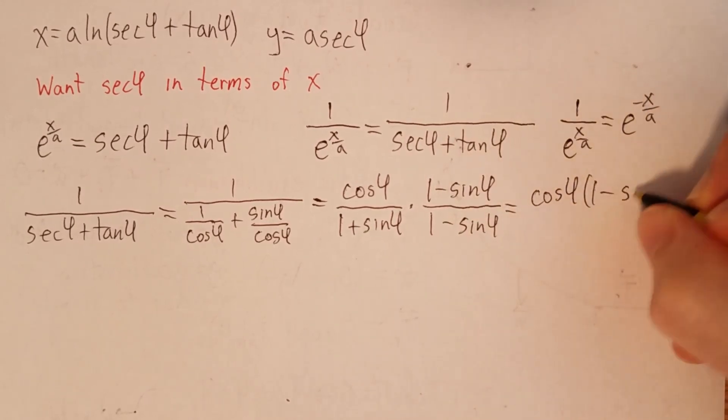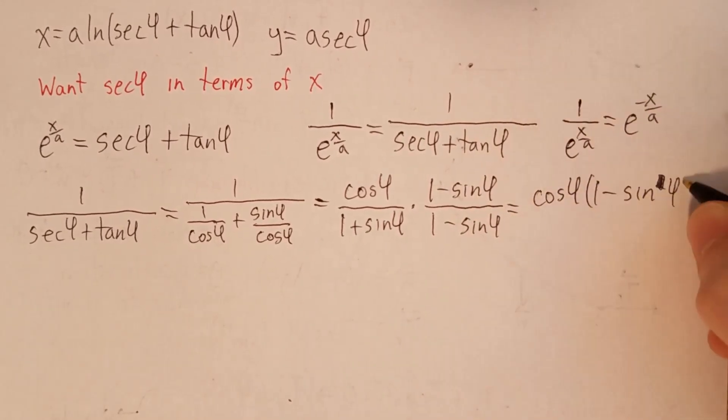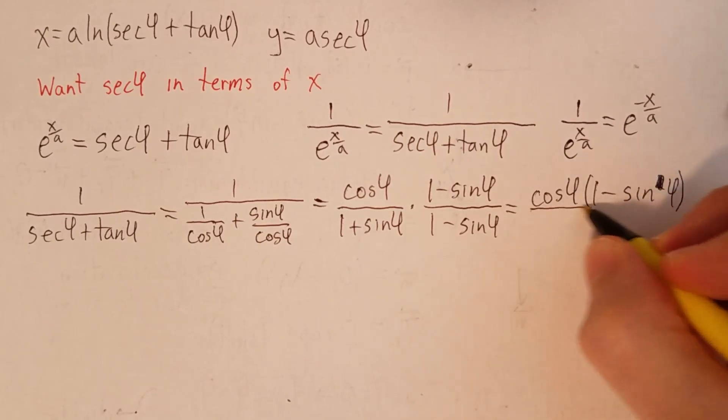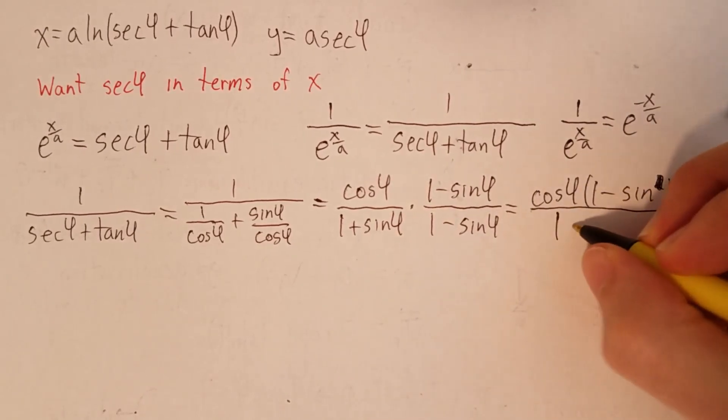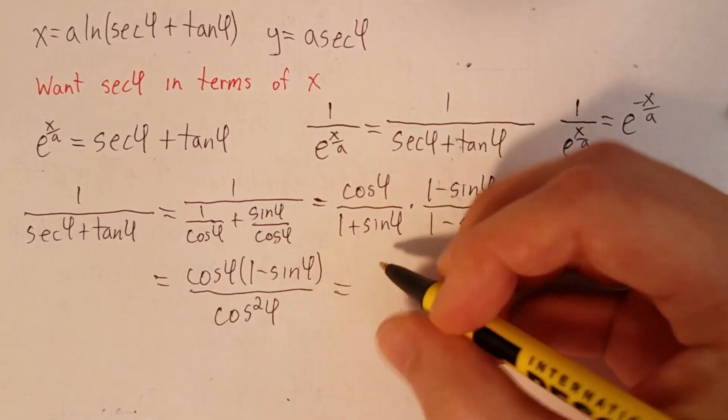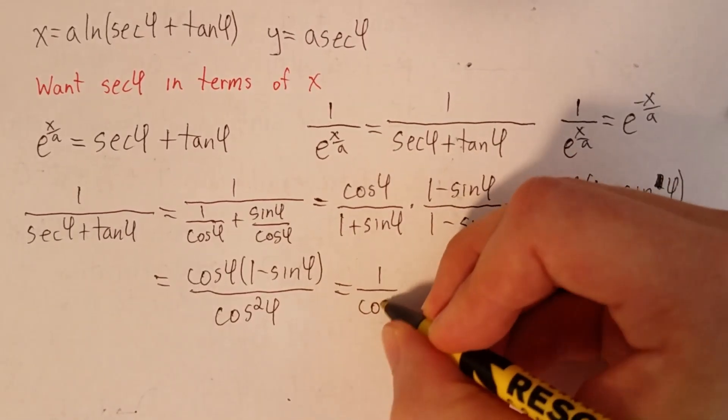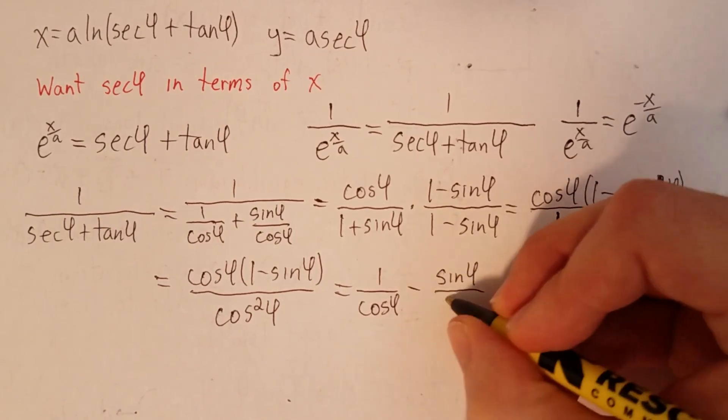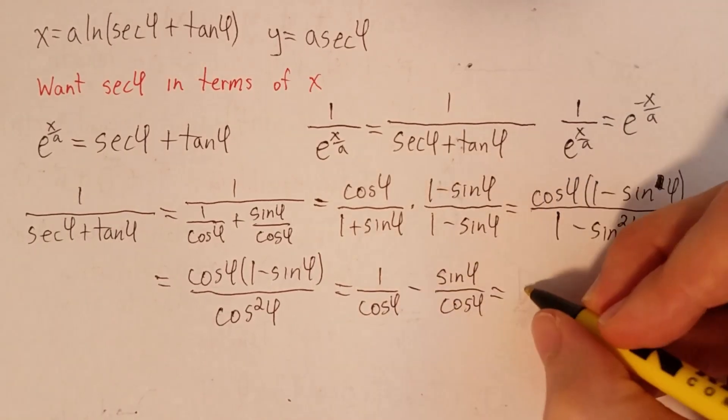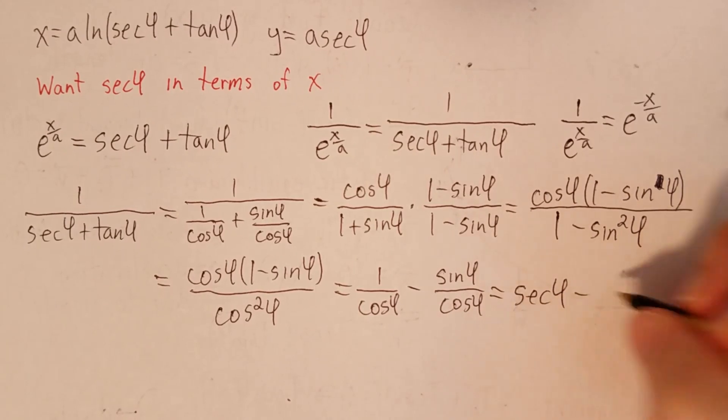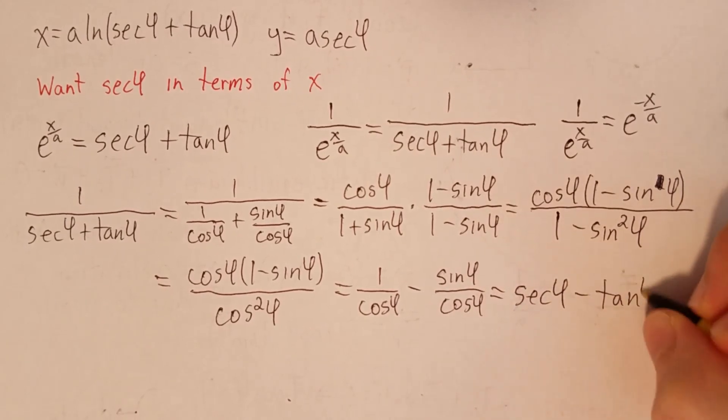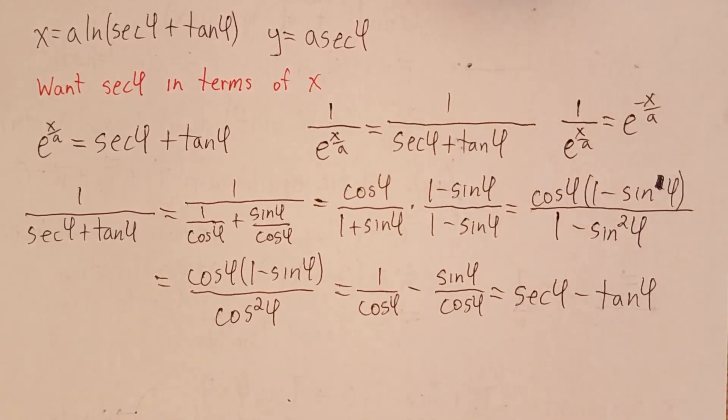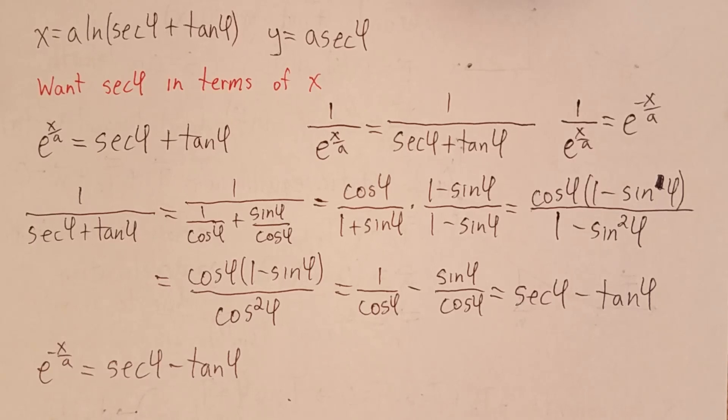And we get, on the top, cosine φ times 1 minus sine φ. On the bottom, 1 minus sine squared φ, which is cosine squared φ. And so the first term is 1 over cosine φ. The second term is minus sine φ over cosine φ. And that is equivalent to secant φ minus tangent φ. And this is really useful, because now we have a second equation. e to the minus x/a is equal to secant φ minus tangent φ.